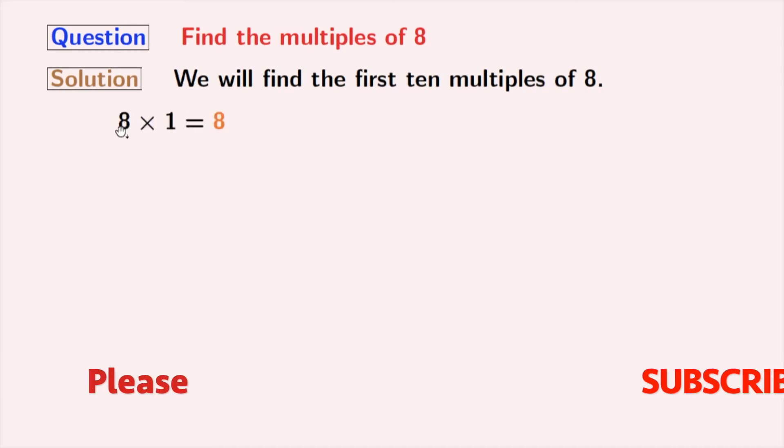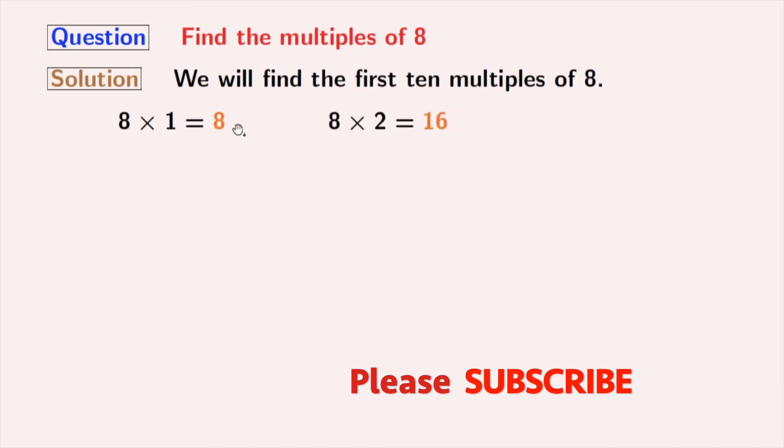Multiplying 8 with 1 we get 8. Multiplying 8 with 2 we get 16. Multiplying 8 with 3 we get 24. Multiplication of 8 and 4 gives us 32.